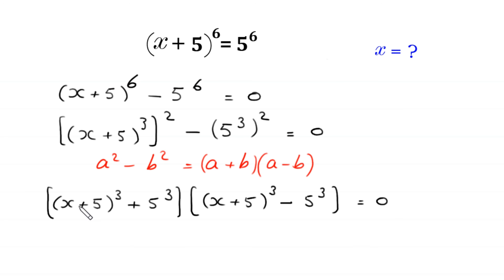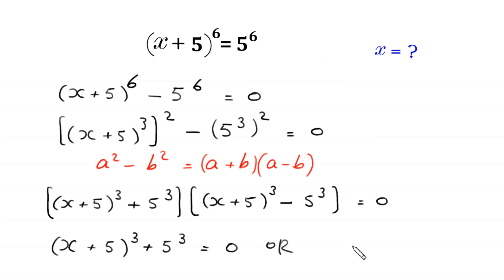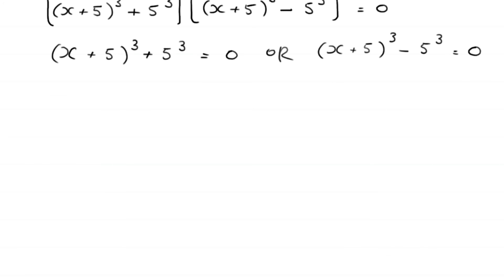From that factorization, we get two cases: Case 1 is x plus 5 whole cubed plus 5 cubed equals 0, and Case 2 is x plus 5 whole cubed minus 5 cubed equals 0.